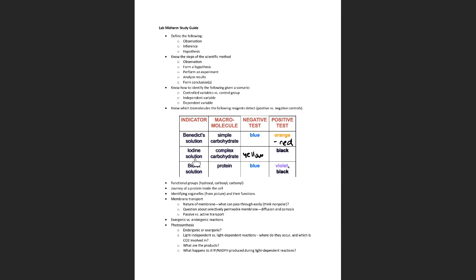A negative control is the exact opposite — it's always going to give a negative result. If I wanted a negative test for the biuret test, I would use something other than a protein, because it would give blue. Something like glucose would be a negative control for the biuret test, while albumin, which is a protein, would be a positive control because it always gives a positive result.